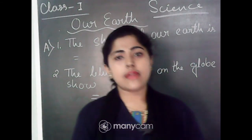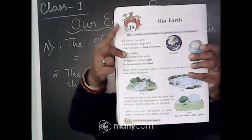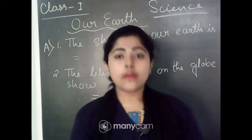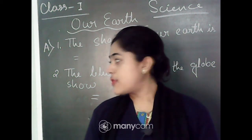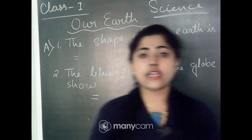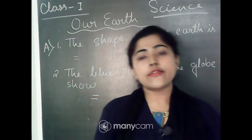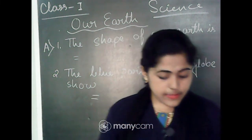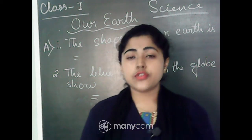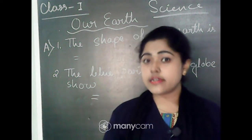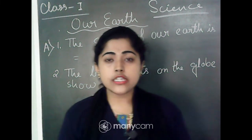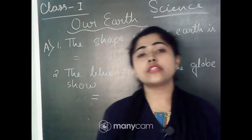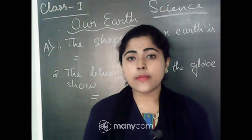Hello everyone, welcome back to your Class 1 Science class. This is Chapter 14, 'Our Earth,' which we already started. I made a video on YouTube — hope you all saw it, where I described everything about our Earth, including mountains, hills, and valleys. We discussed the same things in your previous chapter too, so you can relate both chapters. One important thing: we should keep the land, air, and water clean, just like we keep our home clean. Now let's start the exercise part.